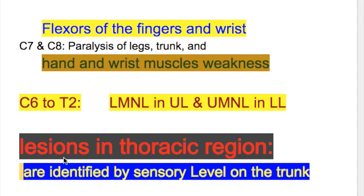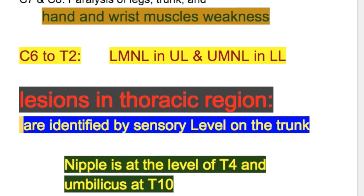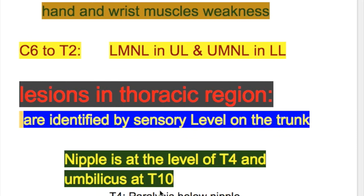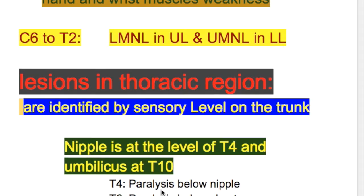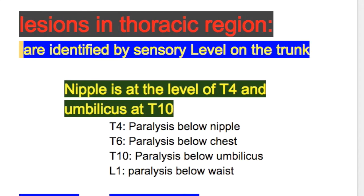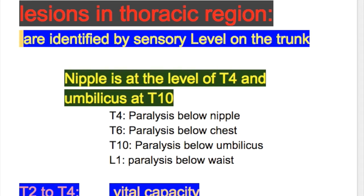Lesions in the thoracic region produce paraplegia. Thoracic cord lesions are identified by sensory level in the trunk. The nipple is at the level of thoracic 4 and the umbilicus is at the level of thoracic 10. A lesion at thoracic 4 causes paralysis below the nipple, at thoracic 6 causes paralysis below the chest or rib cage, and at thoracic 10 produces paralysis below the umbilicus. A lesion between thoracic 2 to thoracic 4 reduces vital capacity to 30 to 50 percent of normal.